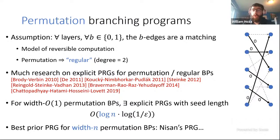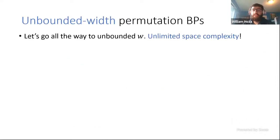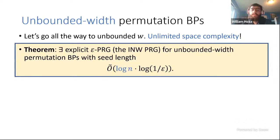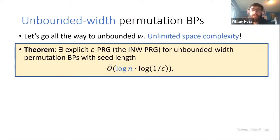We looked at wider permutation branching programs and went all the way to unbounded width. At that point, since we don't have a bound on space, this is about de-randomization of reversible computation rather than space-bounded computation. Our theorem says there is an explicit pseudorandom generator for unbounded-width permutation branching programs with seed length roughly log(n) times log(1/epsilon) — the same seed length previously known only for the constant-width case, with absolutely no dependence on width. The pseudorandom generator itself is the INW generator (Impagliazzo-Nisan-Wigderson); it's the same construction with a different analysis.